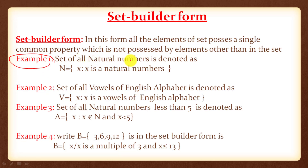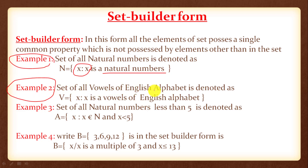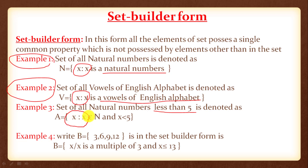Set builder form. Example 1: the set of natural numbers is denoted as N = {x such that x is a natural number}. Example 2: the set of vowels of the English alphabet is denoted as V = {x such that x is a vowel of the English alphabet}. Example 3: the set of all natural numbers less than 5 is denoted as A = {x such that x ∈ N and x < 5}.